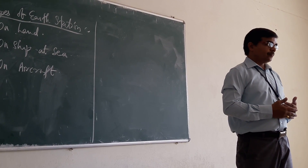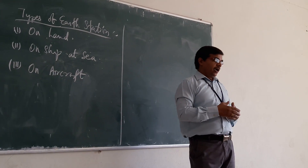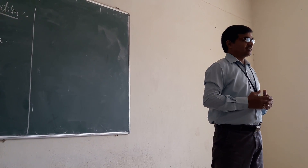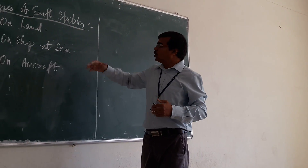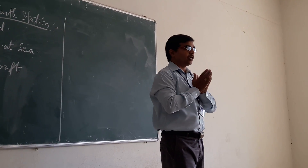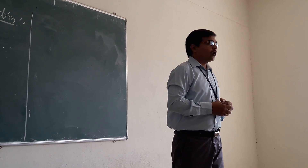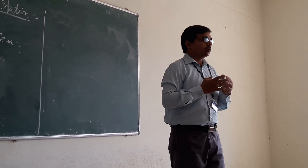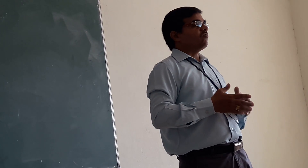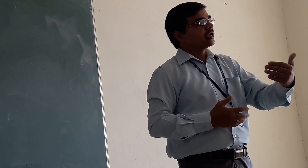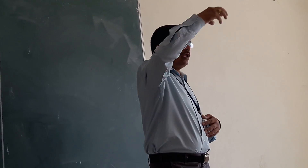On the other hand, if the earth station is on an aircraft, then the earth station is in space. As the aircraft is moving, if we want to know the position of the earth station at any particular time, we should know the three-dimensional coordinate of the earth station — the X axis, the Y axis, and the Z axis — because the earth station is here in space.